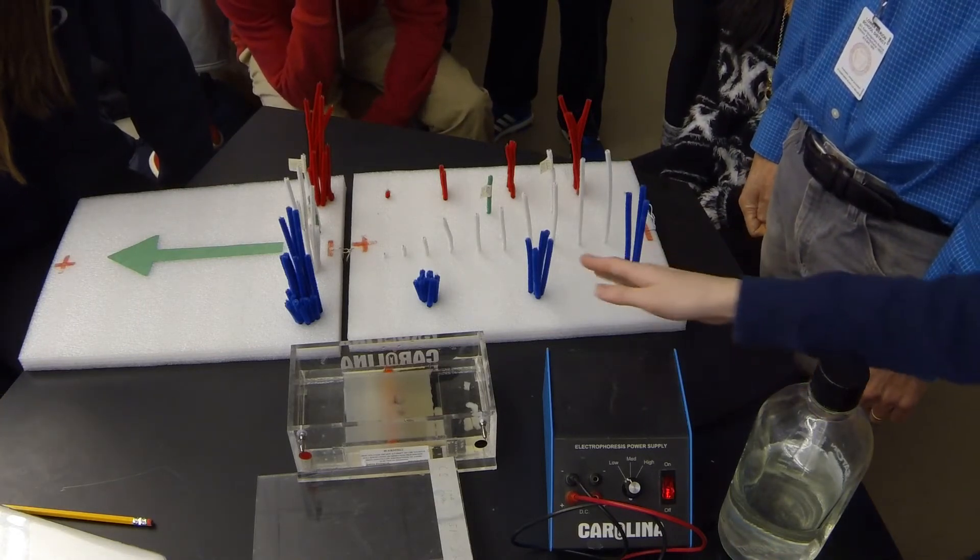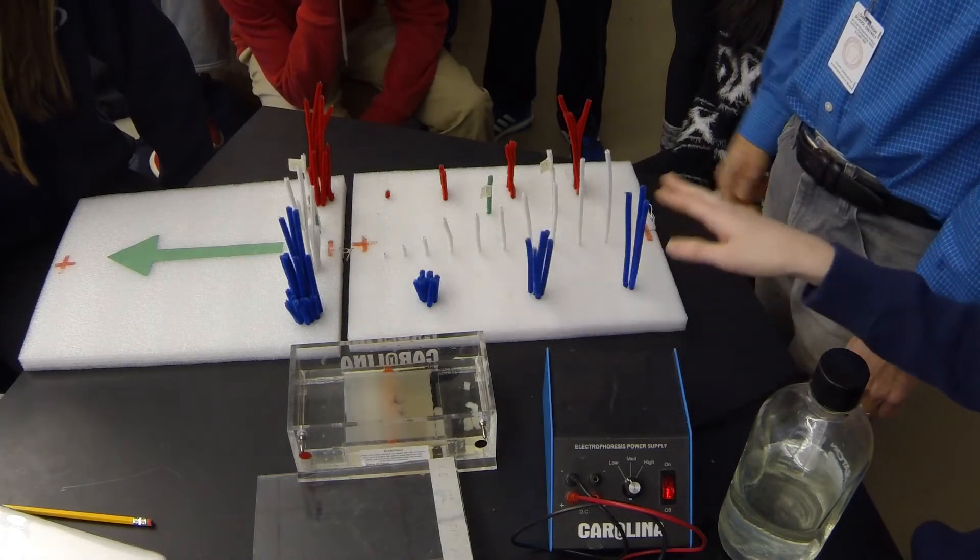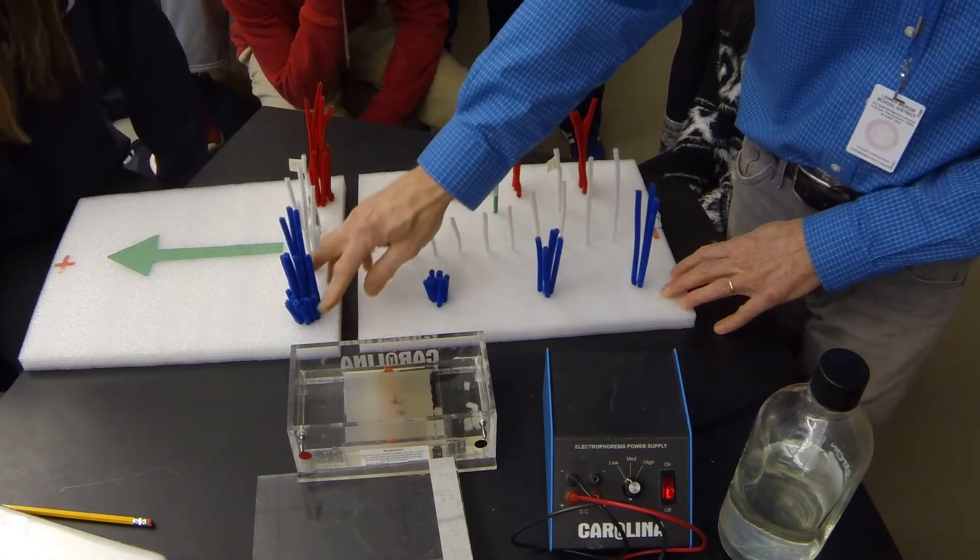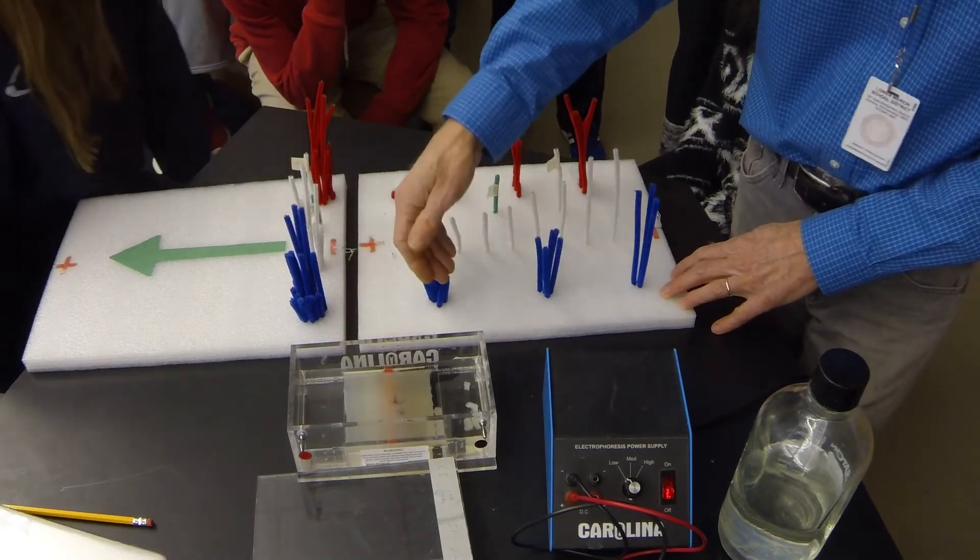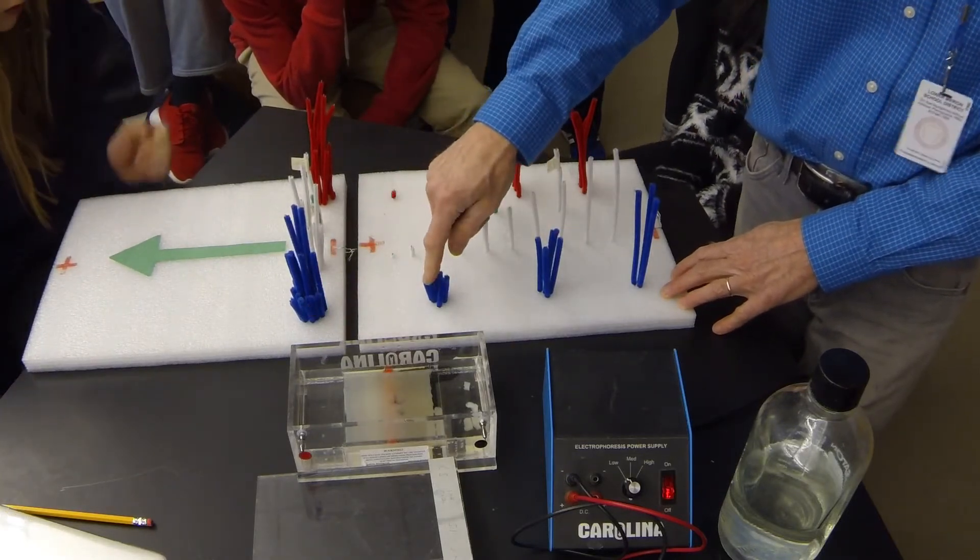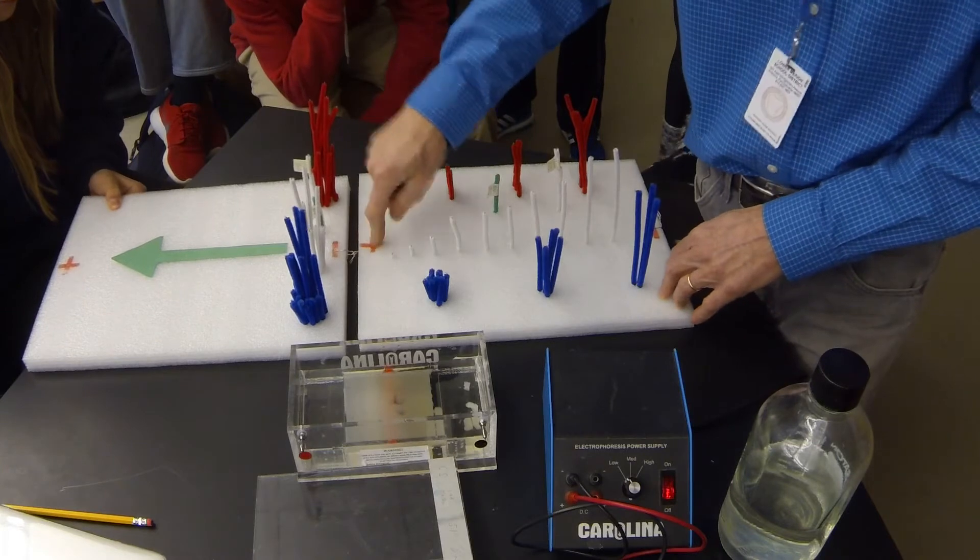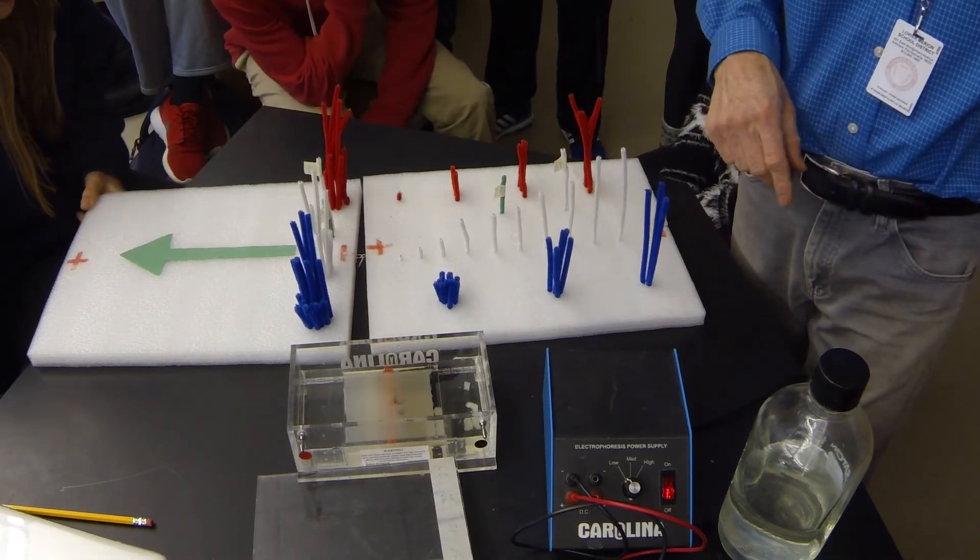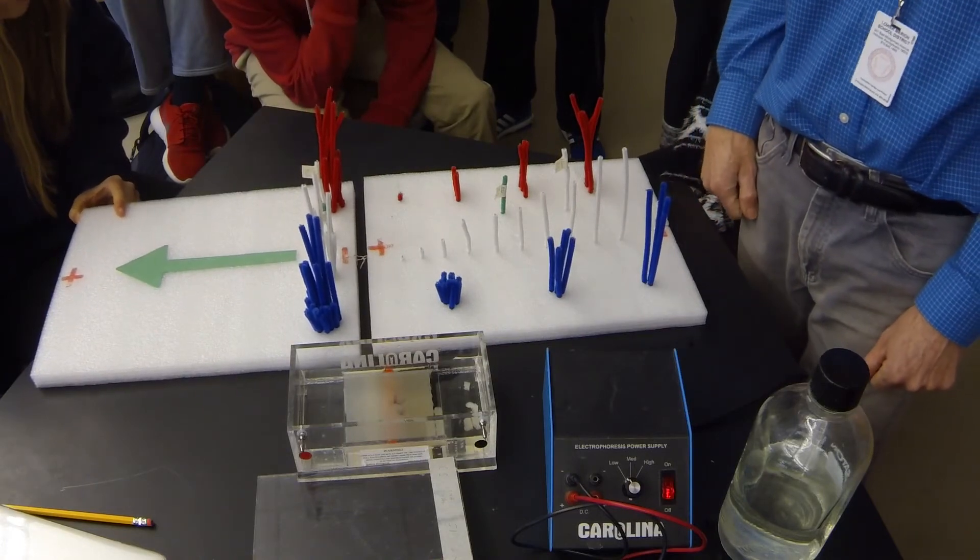Student: I don't understand like why it gets smaller and why it gets bigger. Teacher: Well, we start out, they're all in one place. They end up in different places. The small ones swim faster toward the positive end of the plate than the big ones. You run faster than me because you're smaller than me. Quick little guy, right? Yeah.